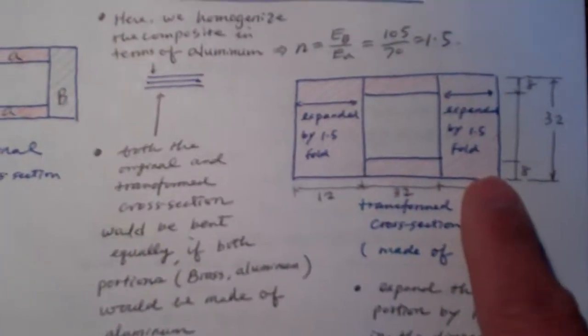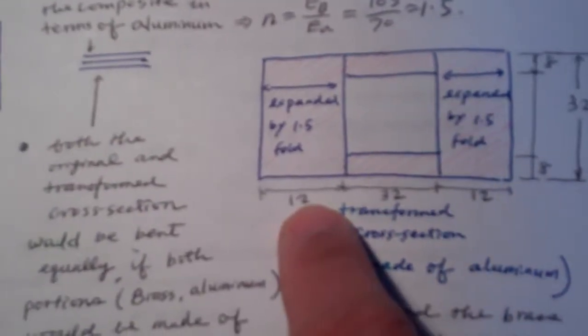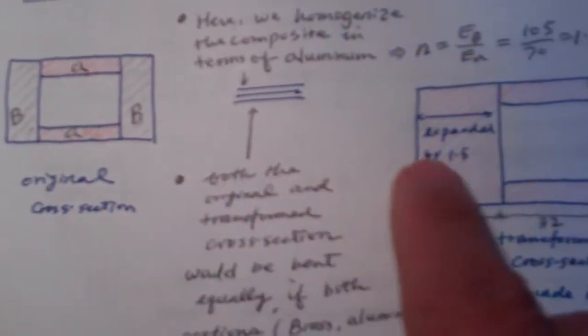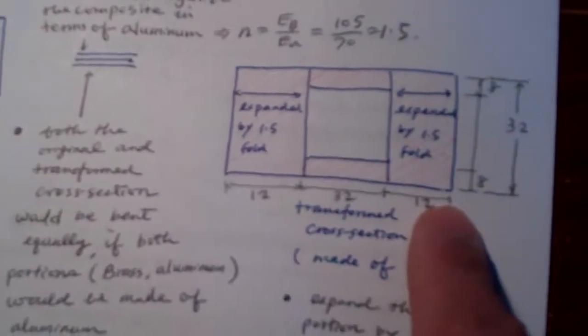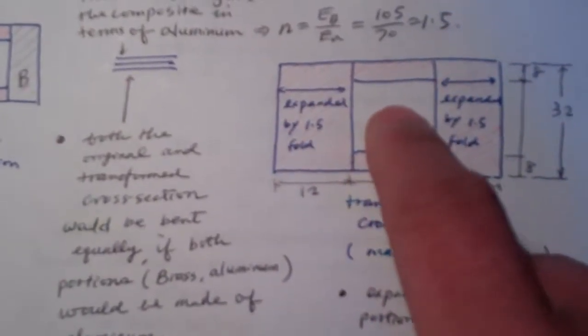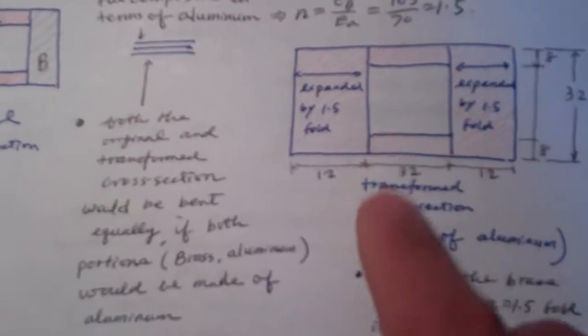So with this, then I put the dimensions here. From the original aluminum dimension is 8, and here we widen to 12, and both sides 12. So we calculate the location of the neutral axis. For this example, it just passes through the centroid of the transformed section.